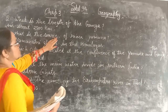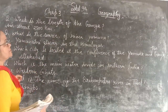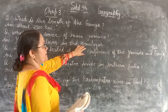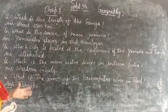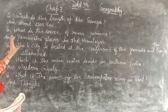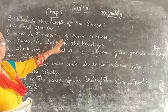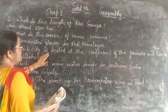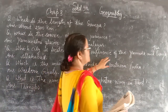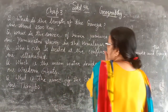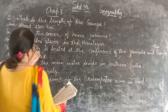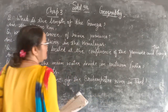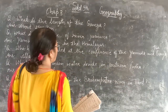What is the source of the river? Which city is located at the confluence of the Yamuna and Ganga?